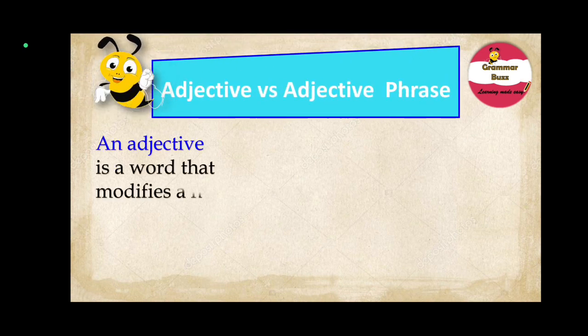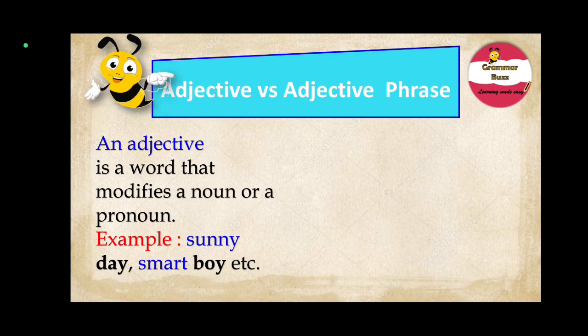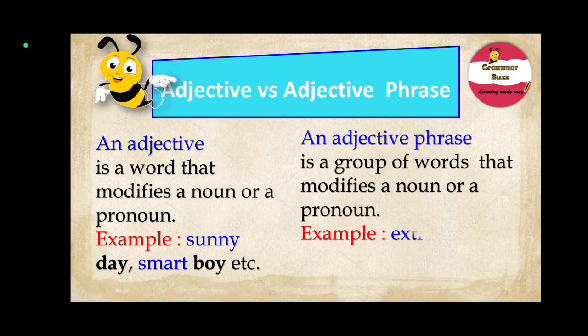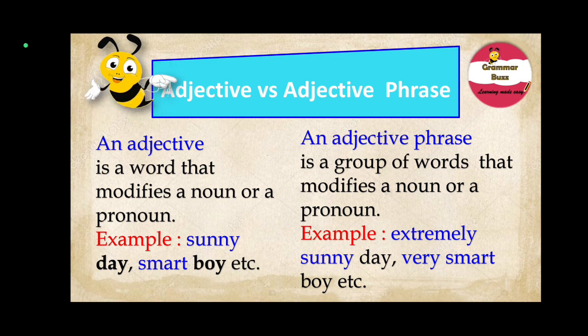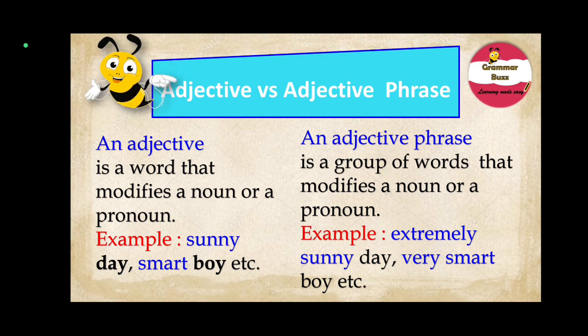An adjective phrase is no different from an adjective. The only difference is: an adjective is a single word that modifies a noun or a pronoun — for example, 'sunny day' or 'smart boy,' where sunny describes the noun day and smart describes the noun boy. But an adjective phrase is a group of words that modifies a noun or a pronoun — for example, 'extremely sunny day' or 'very smart boy.' It does the same work but uses a combination of words instead of one word.